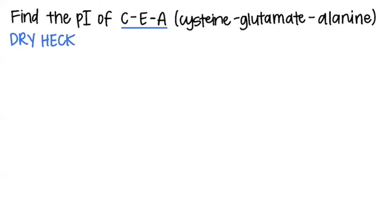So the first thing I like to do is go through my peptide chain and identify which amino acids have ionizable R groups. First I notice that C is in DRY-HEC, so it has an ionizable side chain. Next I notice E is in DRY-HEC, so it has an ionizable side chain. But then I notice that A is not in DRY-HEC, meaning it doesn't have an ionizable side chain.